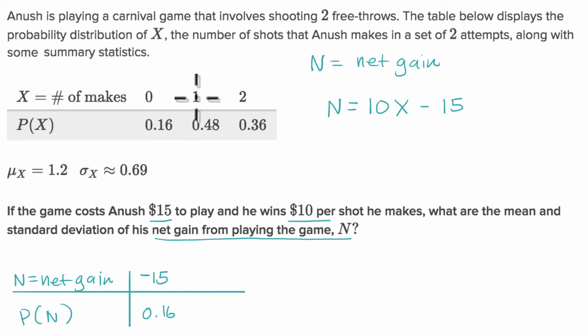When he makes one shot, the net gain is going to be 10 times one minus 15, which is negative five. But it's going to have the same probability. He has a 48% chance of making one shot, and so it's a 48% chance of losing $5.